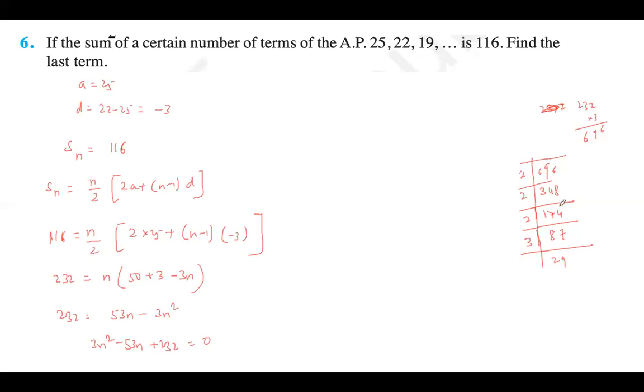I think I made a mistake. It's 348. So it will be 24 and 29. Prime factorization, that's 53.